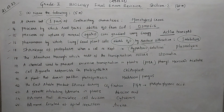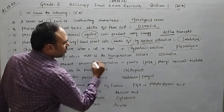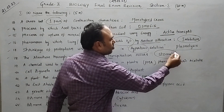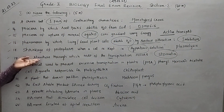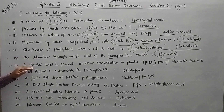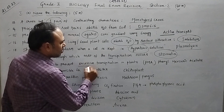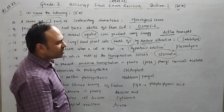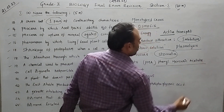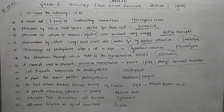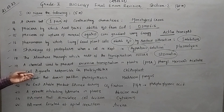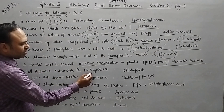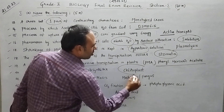Question 18: the structure through which most of the transpiration occurs — that is the stomata. Question 19: a chemical used to prevent excessive transpiration — that is PMA, which stands for phenyl mercuric acetate. Question 20: the cell organelle responsible for photosynthesis — that is the chloroplast.